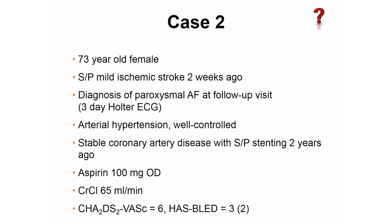Now the patient progresses to the secondary prevention phase. This lady had a mild ischemic stroke two weeks ago. She had a cryptogenic stroke — no cause was found, she was in sinus rhythm. Because she has coronary disease, she was on aspirin, which was left after the stroke. Hypertension is well controlled. Now she comes for a follow-up cardiology visit, a Holter ECG was done, and paroxysmal atrial fibrillation was found. So now we have a secondary prevention scenario with newly diagnosed AFib. Her CHADS-VASc score is 6 and HAS-BLED score is 3 because of age, aspirin, and previous stroke.